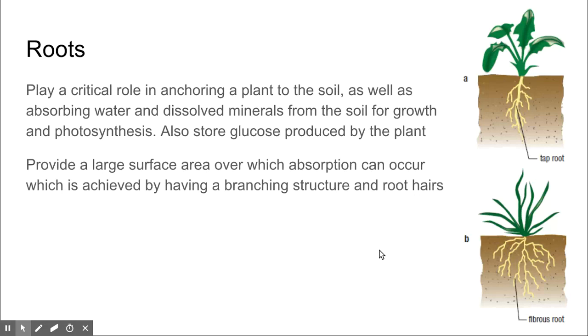One of the macroscopic structures is our root system, which plays a vital role in anchoring our plant into the soil. We can see there are variations of roots, including the taproot and fibrous root, which go to varying depths and widths based on the plant's requirements. These also absorb water and minerals from the soil, allowing them to photosynthesize. Some roots can store glucose produced by the plant. Because of their small structure, they have a large surface area, which increases the rate of absorption. This is because of the small root hairs and branching structure they have.